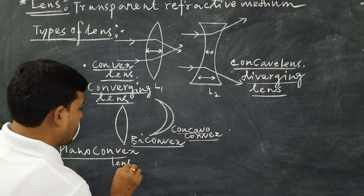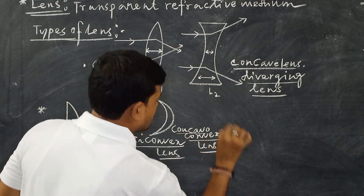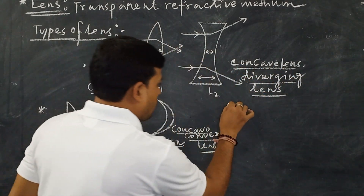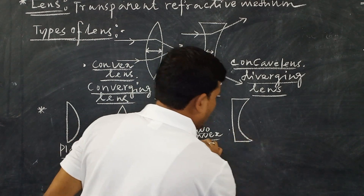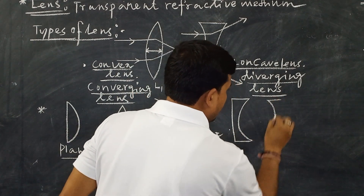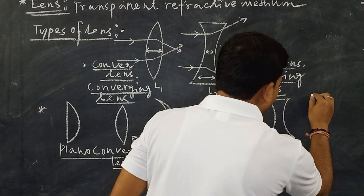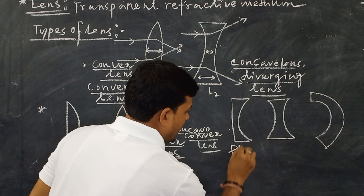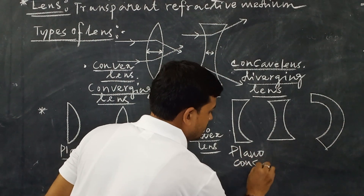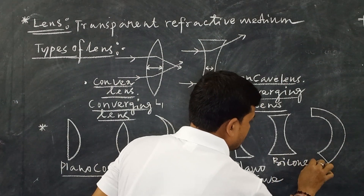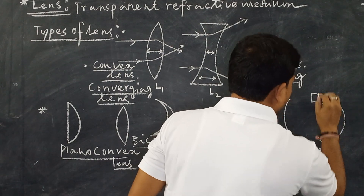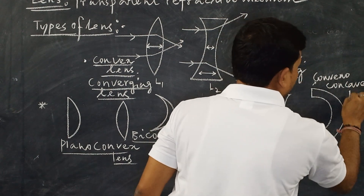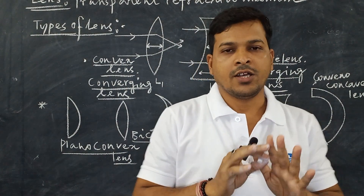Similarly, the concave lens is also of three types. The first one is the planoconcave, the second one is the bi-concave, and the third one is the convexoconcave. These are the different types of lenses based on their shape.